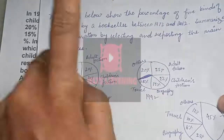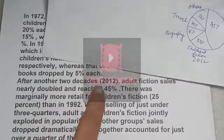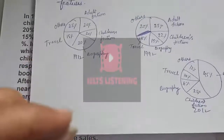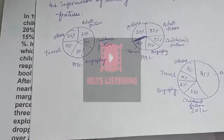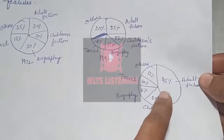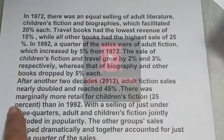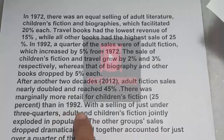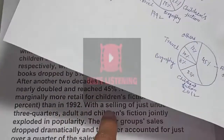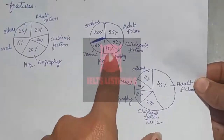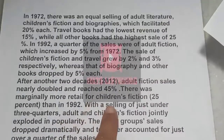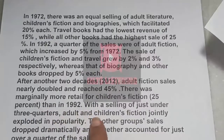After another two decades, in 2012, adult fiction sales nearly doubled and reached 45%. There was marginally more retail for children's fiction — 25% — compared to 1992 where it was 22%. With the selling of just under three quarters combined, adult and children's fiction jointly exploded in popularity.